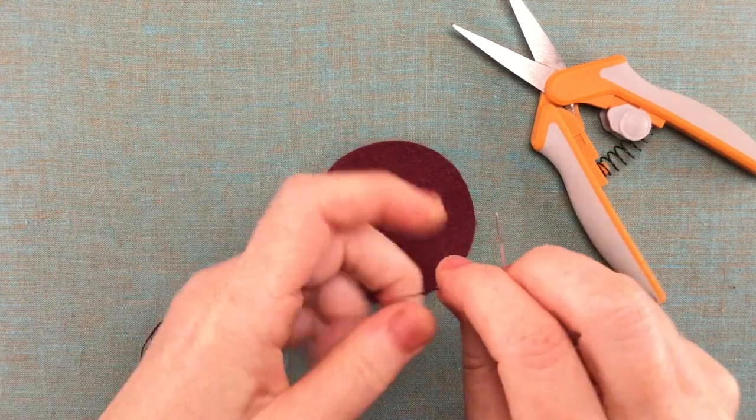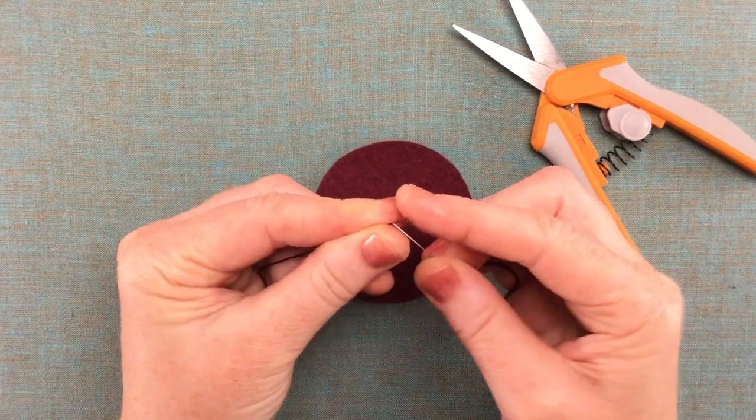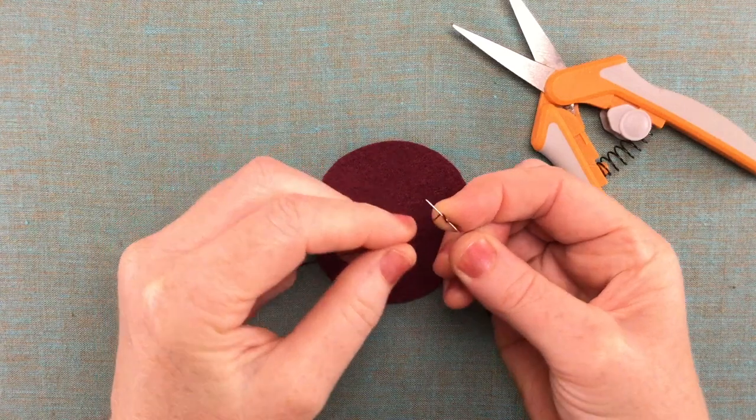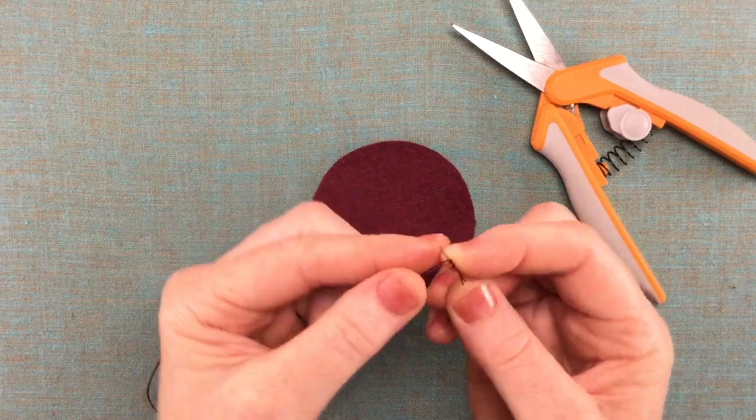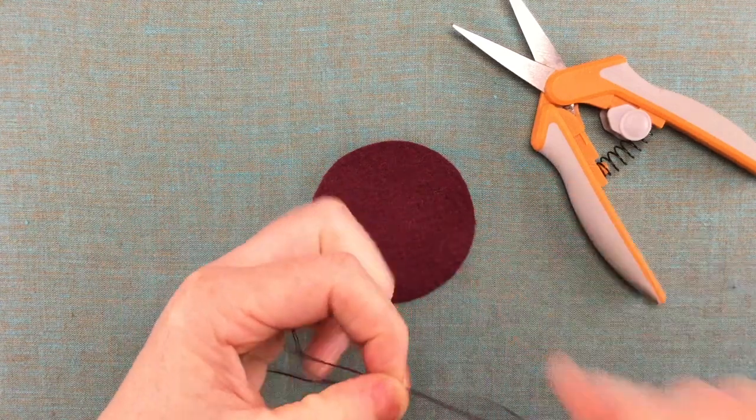So take out your two and three quarters inch diameter circle and you're going to need a two strand length of embroidery thread here. I'm just going to make my knot and we'll get started.